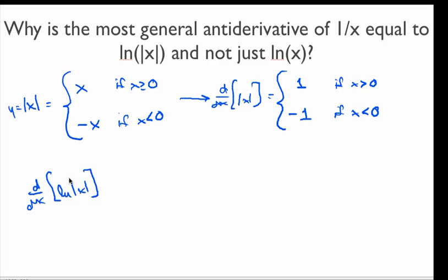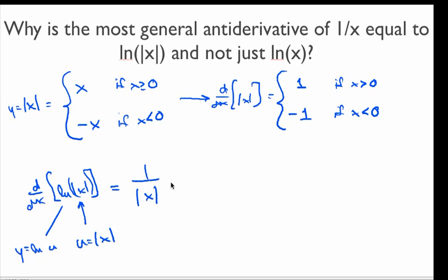Now we're going to look at the derivative of natural log of absolute value of x. This is a composite function with an inside function u equal to absolute value of x and an outside function y equal to natural log of u. So taking the derivative is a chain rule situation. I take the derivative of the outside, which would be 1 over u, and then put in the original inside, which is absolute value of x, and then multiply by the derivative of absolute value of x.